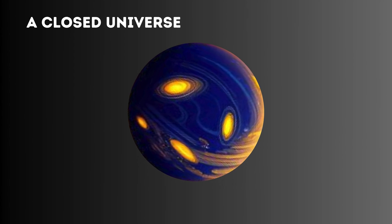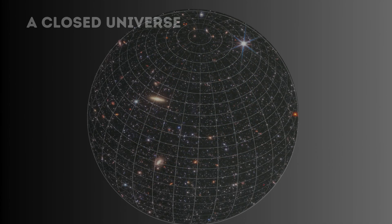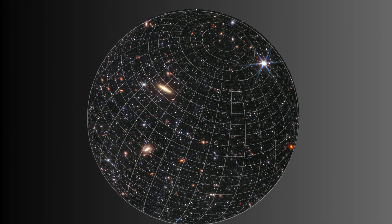A closed universe is curved like the surface of a sphere. In this model, space is finite but unbounded. You can travel in a straight line and eventually return to your starting point.